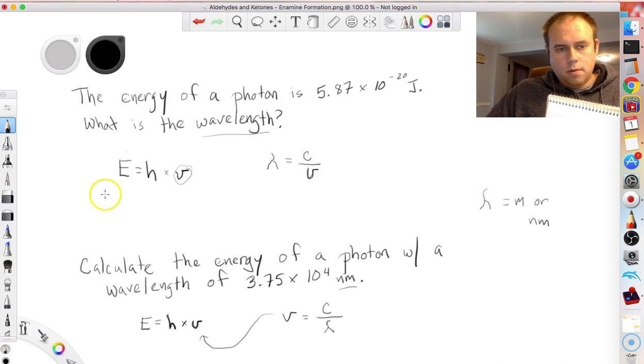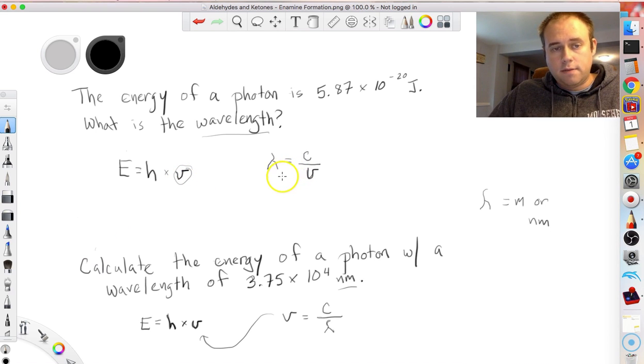All right guys, so let's take a look at this. What we want to do is we want to solve first for frequency, and then we'll plug it in to find wavelength for this question. So I'll start by algebraically solving for frequency. 5.87 times 10 to the minus 20 joules is equal to Planck's constant, which is 6.63 times 10 to the minus 34 joules second.